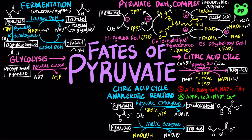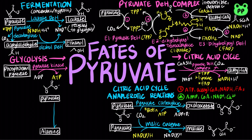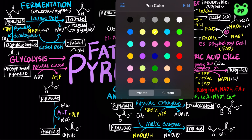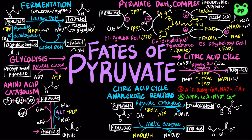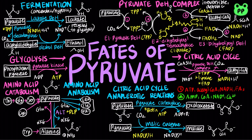Lastly, pyruvate is an important intermediate in amino acid metabolism. Pyruvate can interconvert with alanine by the enzyme alanine transaminase (alanine aminotransferase), which catalyzes the transfer of an amino group from glutamate onto pyruvate using the coenzyme pyridoxal phosphate (PLP), forming alpha-ketoglutarate and alanine. Several amino acids are also catabolized to pyruvate, including threonine, glycine, serine, cysteine, and tryptophan. Pyruvate also serves as a precursor to branched-chain amino acids leucine, isoleucine, and valine.